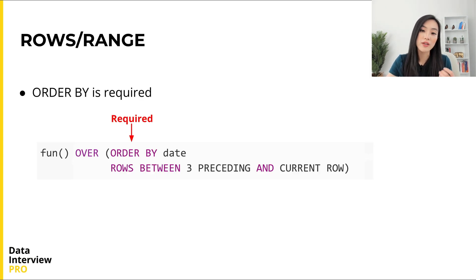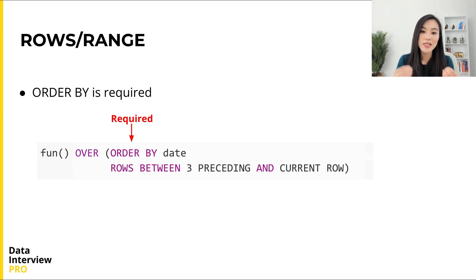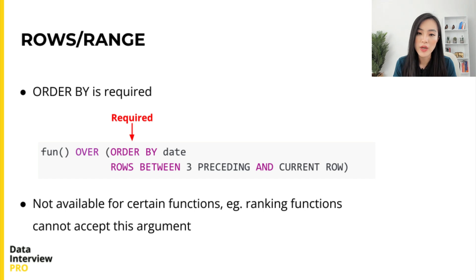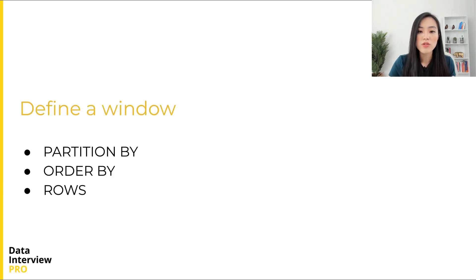There are two things to pay attention to for the ROWS/RANGE argument. First, it requires an ORDER BY argument before it — logically, we need to specify an order to select which rows are preceding or following. For instance, without ORDER BY, the query does not know which rows should be considered preceding and which are following. Second, the ROWS/RANGE argument is not available for certain functions — for example, ranking functions cannot accept this argument. That's probably why ROWS and RANGE are not used as frequently as other arguments.